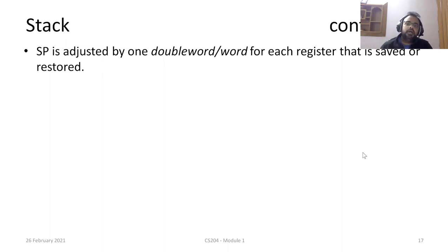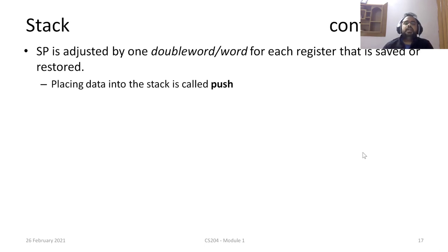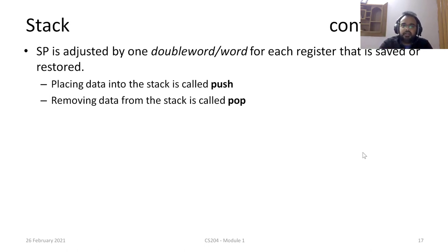The stack pointer needs to be adjusted by one word or one double word according to the data we want to place. Placing data onto the stack is called push and removing it is called pop. Every time there is a push or pop we need to change the stack pointer appropriately. This is similar to what you would have done yourself when implementing a stack at the high-level language.